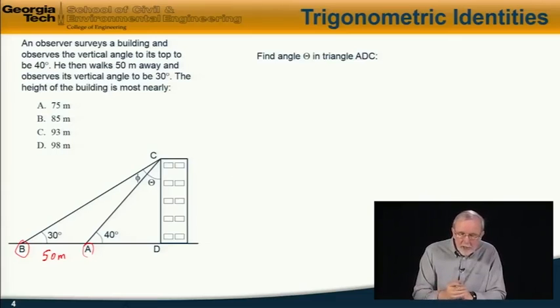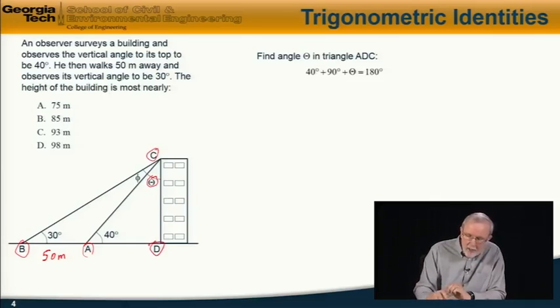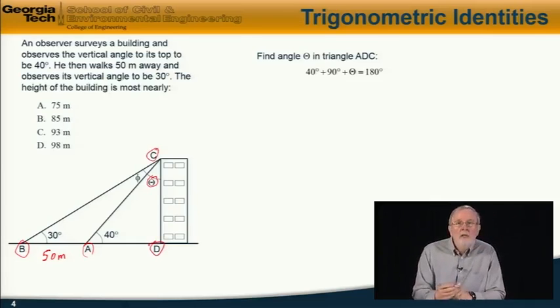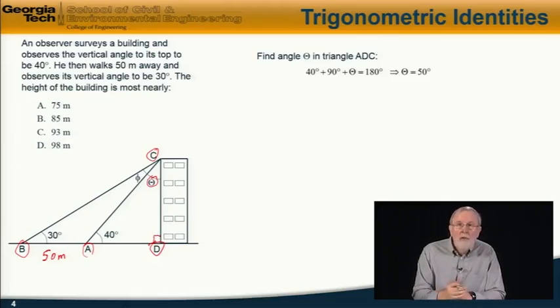First we want to find angle theta by looking at the triangle ADC, the right angle triangle. The sum of the angles in that triangle is 180 degrees, so 40 degrees plus 90 degrees plus theta equals 180, therefore theta is 50 degrees.